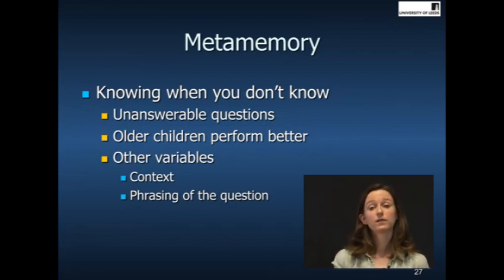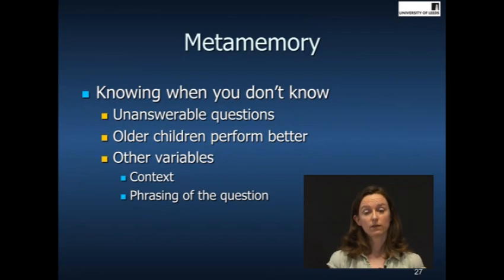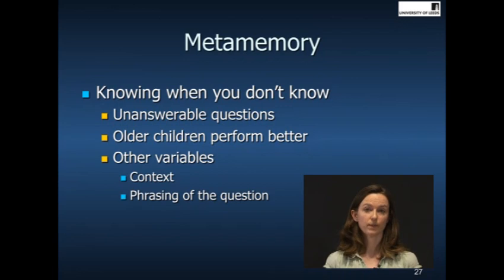We've also found an effect of other variables. The context of the interview is another very important variable that affects this tendency to admit whether or not you don't know. If children think that the adult interviewing them genuinely wants to know the answer to the question because the adult doesn't know and they are just requesting information from the child, the child is more likely to correctly say when they do not know the answer.